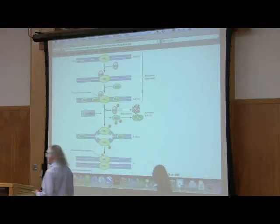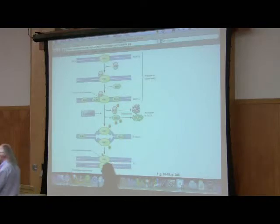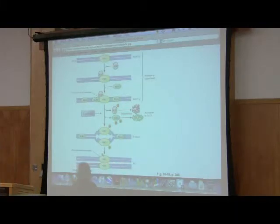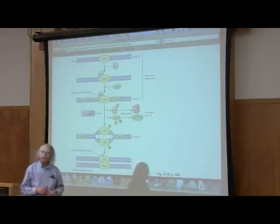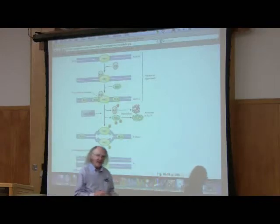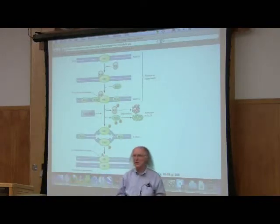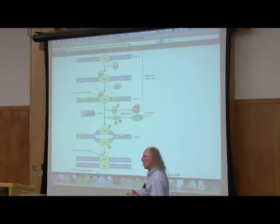So both prokaryotes and eukaryotes and viruses as well have origins, places where the replication starts. In the case of E. coli, there's one origin, one place where it starts, and then it just goes out bi-directionally from there. In eukaryotic cells, the chromosomes are so long that one origin doesn't make sense. So origins are scattered relatively frequently throughout the entire length of a eukaryotic chromosome. So replication can start in several places at the same time. And that's an efficient way to do replication, especially of a very large DNA.